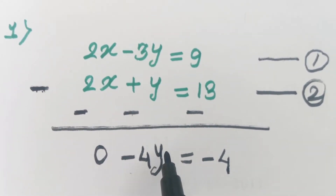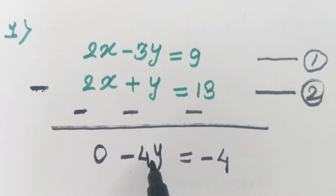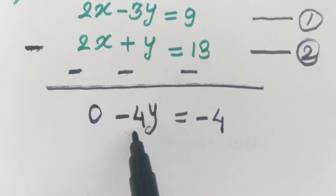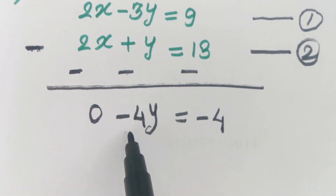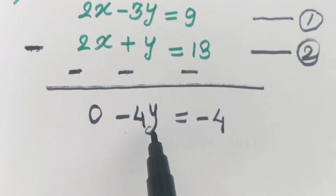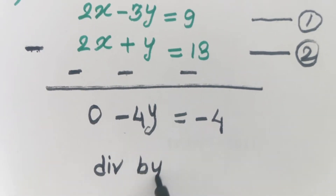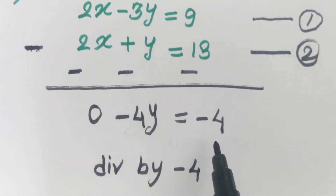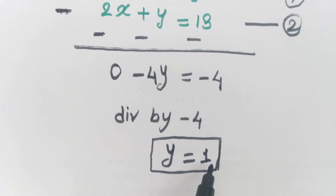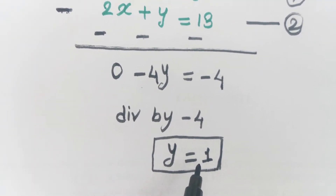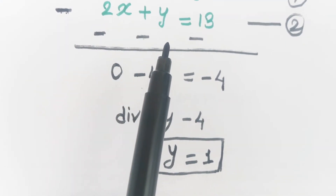We want the value of variable y, so divide both sides by minus 4. The new equation has coefficient of y equal to minus 4, so dividing both sides by minus 4, we get y equals 1. Once we have the value of one variable, we substitute this value into any one of the original equations.